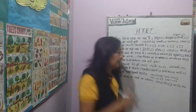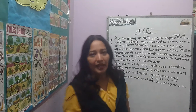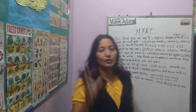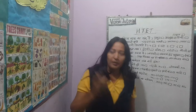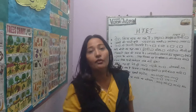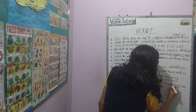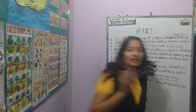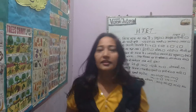Bhasha ke aadhar par rajyon ka vargikaran — in which year were Indian states reorganized on the basis of language? The answer is 1956. From 1956 onwards, the reorganization of states in India was done on a linguistic basis.